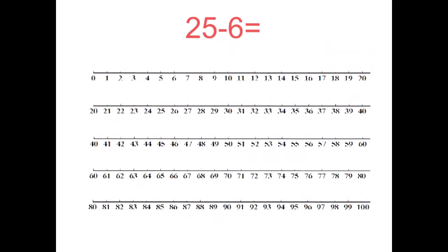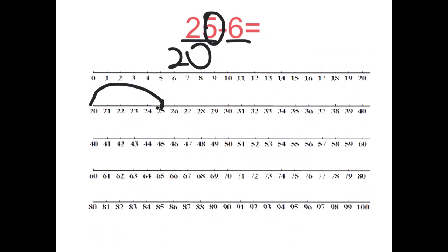Here's an example on a number line, which is going to show you what I was trying to explain. We have 25 take away 6. The number we're trying to get back to is 20. So we start from 25 and we need to go back to 20 — we jump back 5. Now we're back at 20. But we've gone back 5 and we need to go back 6, so we need to go back 1 more. If you're on 20 and you go back 1 more, the answer is 19. Let's try another question.